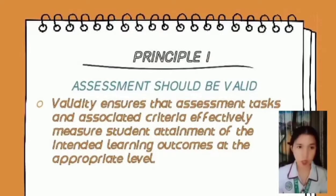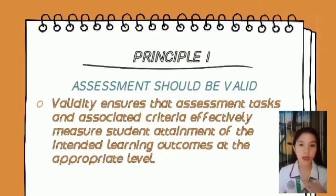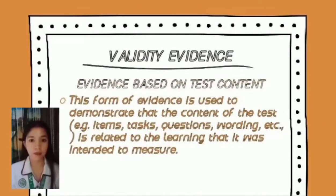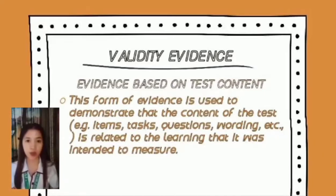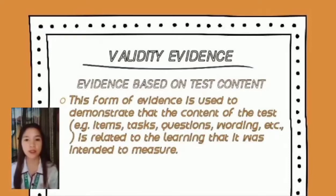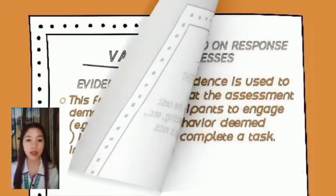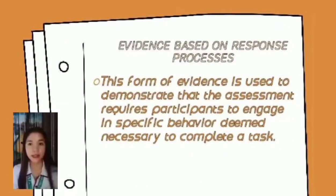Validity evidence in assessment includes evidence based on test content. This is used to demonstrate that the content of the test — such as items, tasks, and question wordings — is related to the learning it was intended to measure. For example, a classroom assessment should not have items or criteria that measure topics unrelated to the objectives of the course. Teachers can use a table of specifications to ensure and communicate how the content of the course or unit is being measured.